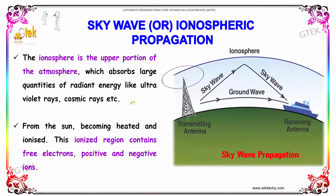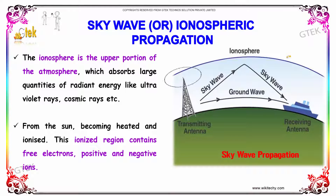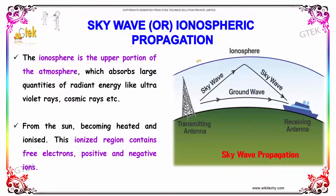Sky wave or ionospheric propagation involves the ionosphere, which is the upper portion of the atmosphere that absorbs large quantities of radiant energy such as ultraviolet rays, cosmic rays, and other rays from the sun, becoming heated and ionized. This ionized region contains free electrons, positive and negative ions.